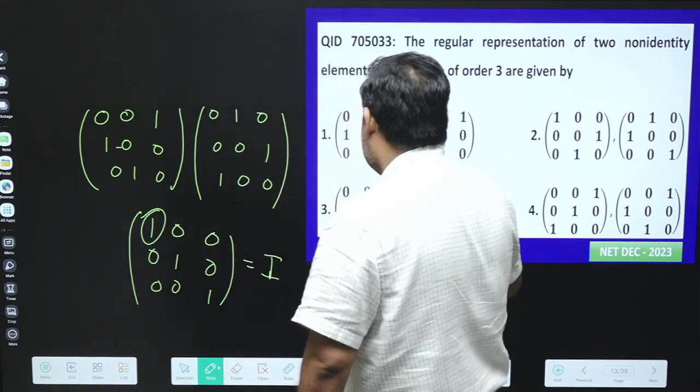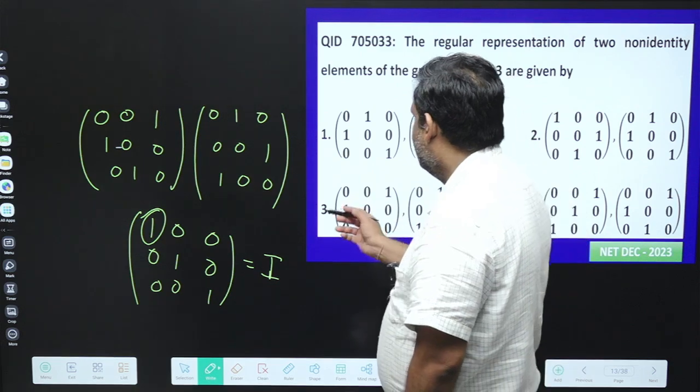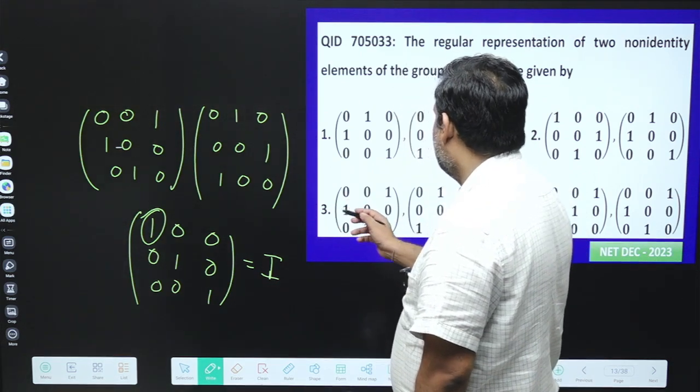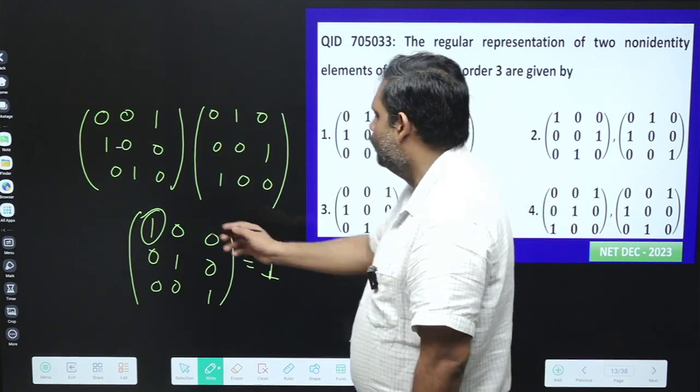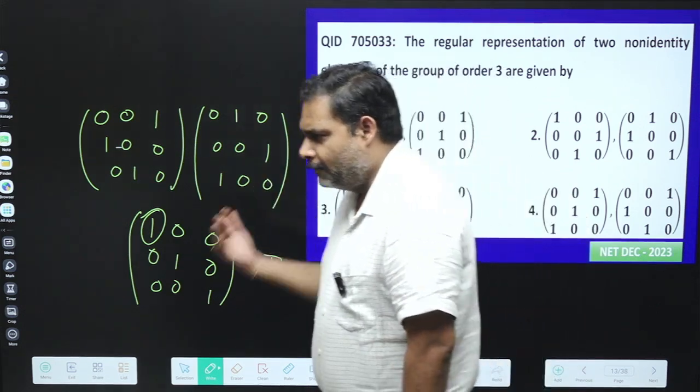You can just check the first element because first element must be 1 for the identity matrix. And once you will get the first element is 1 in option number 3, then obviously you can go to the next level of calculation. So it is very interesting.